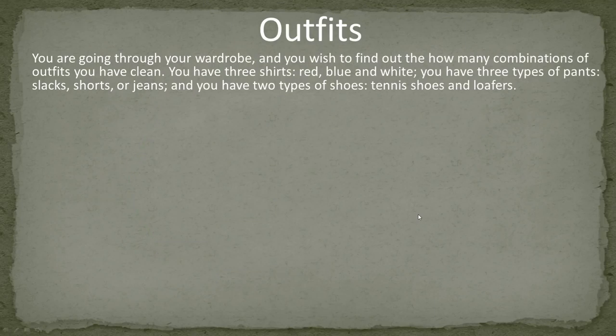Finally, let's go into the closet and go through our wardrobe to find out how many different combinations of outfits you have clean. You have three shirts: red, blue, and white. You have three types of pants: slacks, shorts, or jeans. And you have two types of shoes: tennis shoes and loafers. How many different outfit combinations can we make?